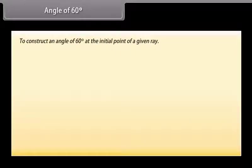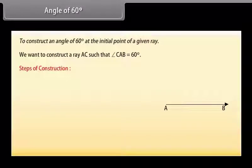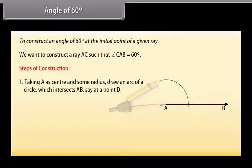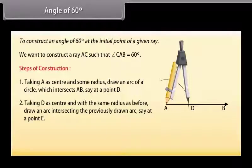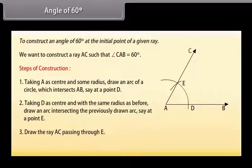Angle of 60 degrees. We know how to construct 30 degree and 45 degree angles. Now we will learn to construct an angle of 60 degrees at the initial point of a given ray. Let us take a ray AB with initial point A. We want to construct a ray AC such that angle CAB is equal to 60 degrees. Taking A as center and some radius, draw an arc of a circle which intersects AB at a point D. Now taking D as center and with the same radius, draw an arc intersecting the previously drawn arc at a point E. Draw the ray AC passing through E. Then angle CAB is the required angle of 60 degrees.